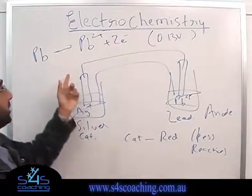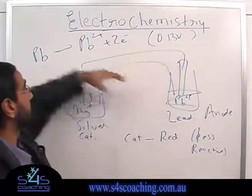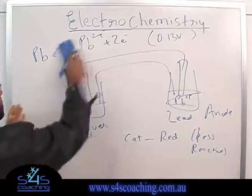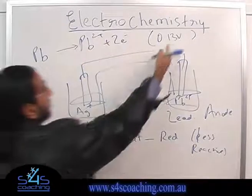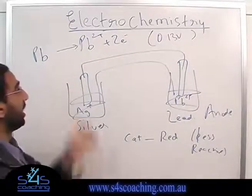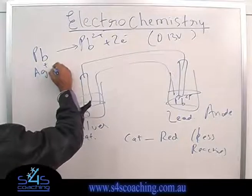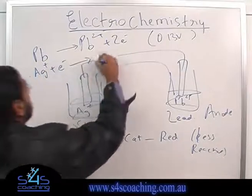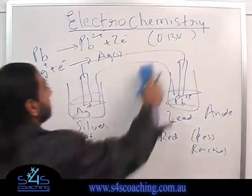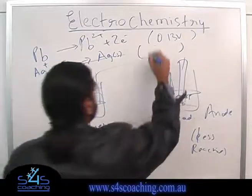If the equation is reversed from how it appears on the data sheet, you need to change the sign of the number — if it was negative it becomes positive, and vice versa. You just have to make sure the equations are in the same direction. And Ag⁺ is going to take the electrons and become Ag solid. The value for the Ag half-equation is 0.8 volts.